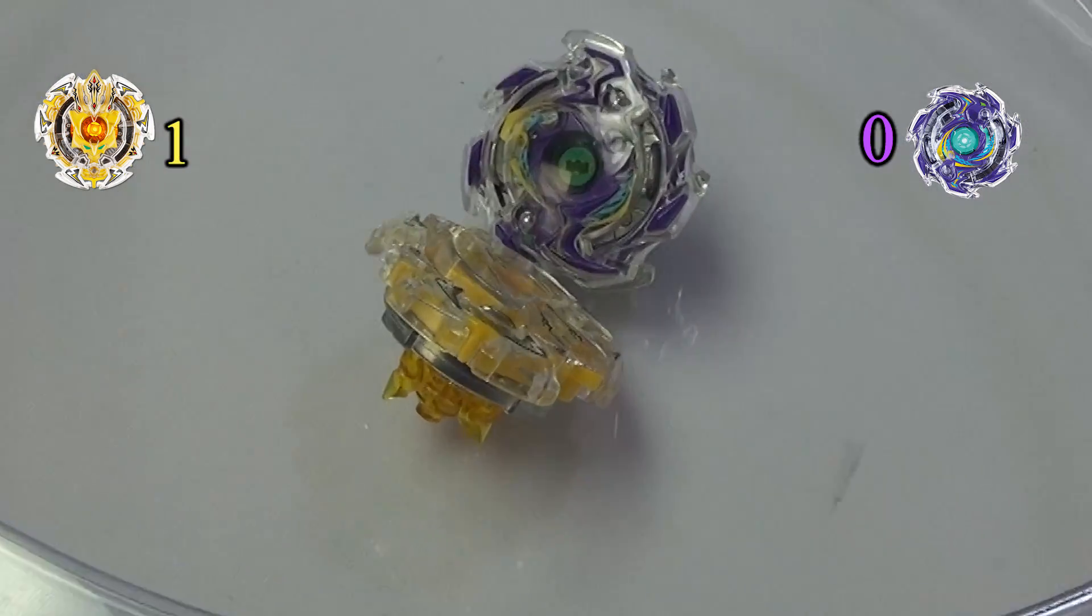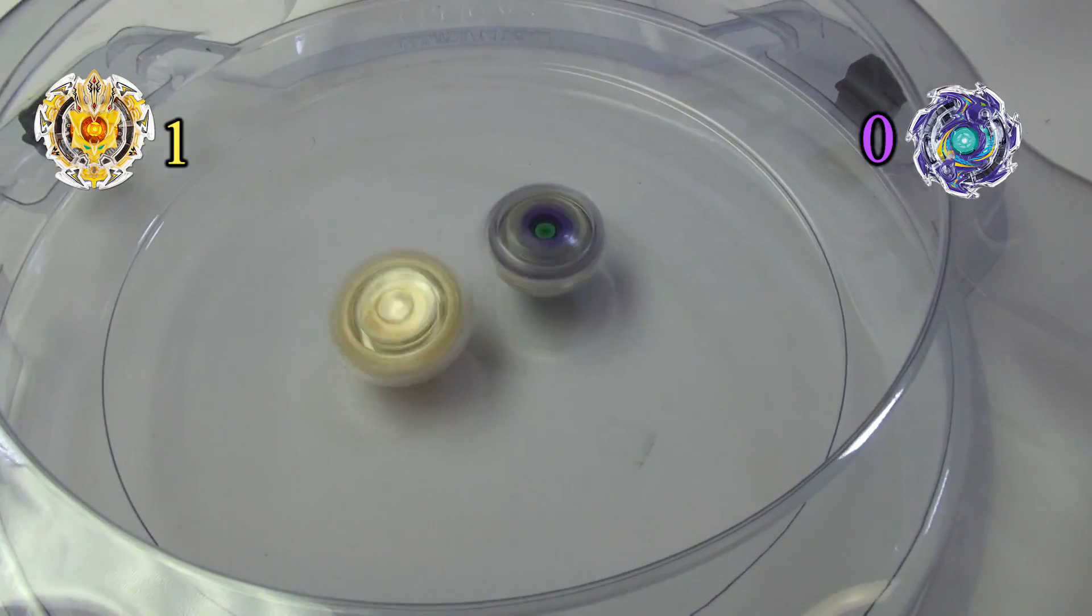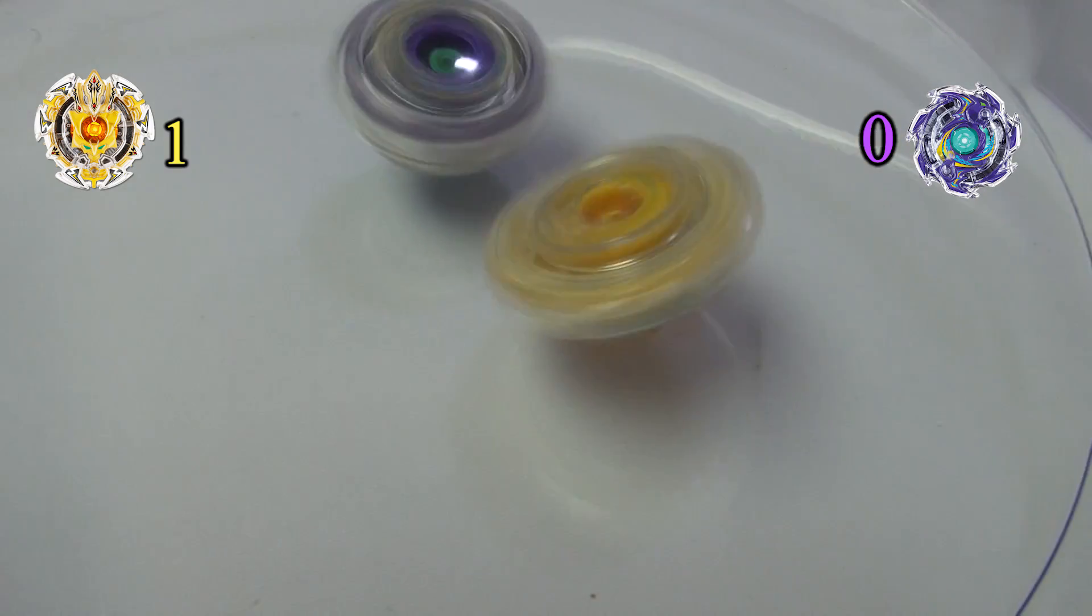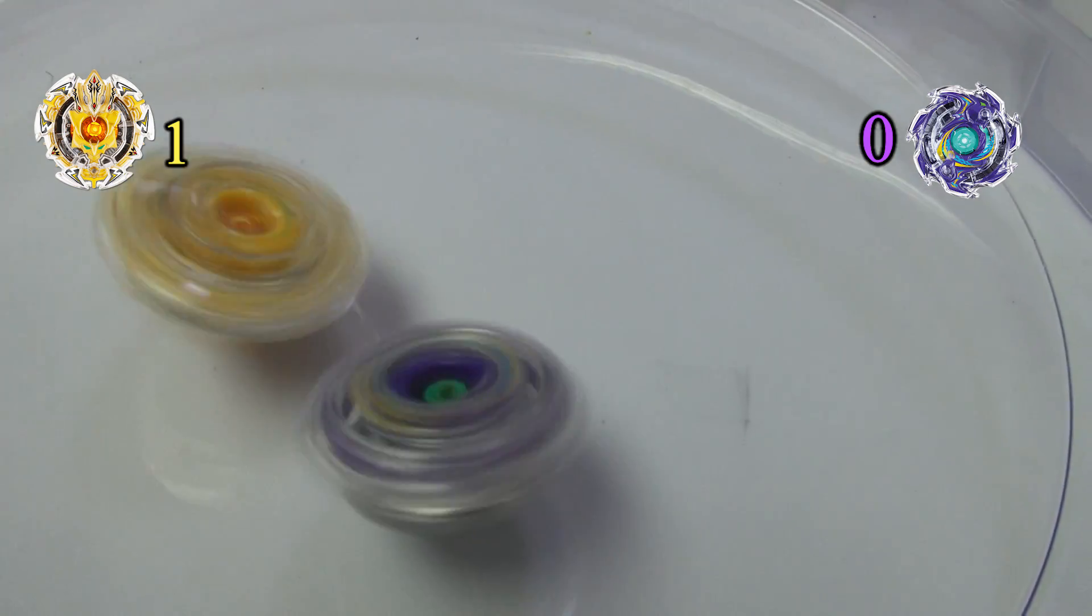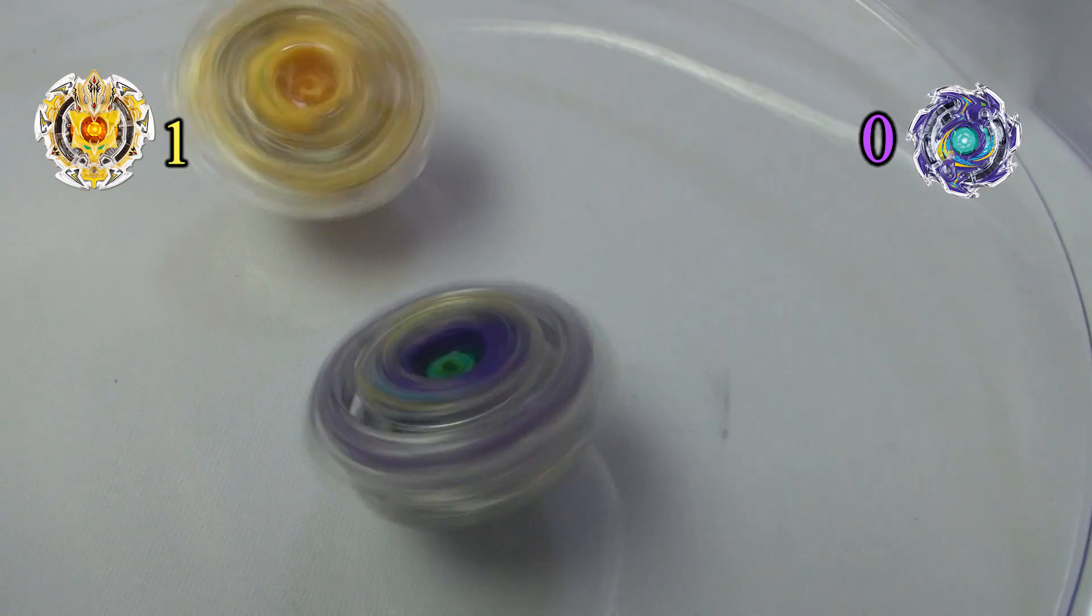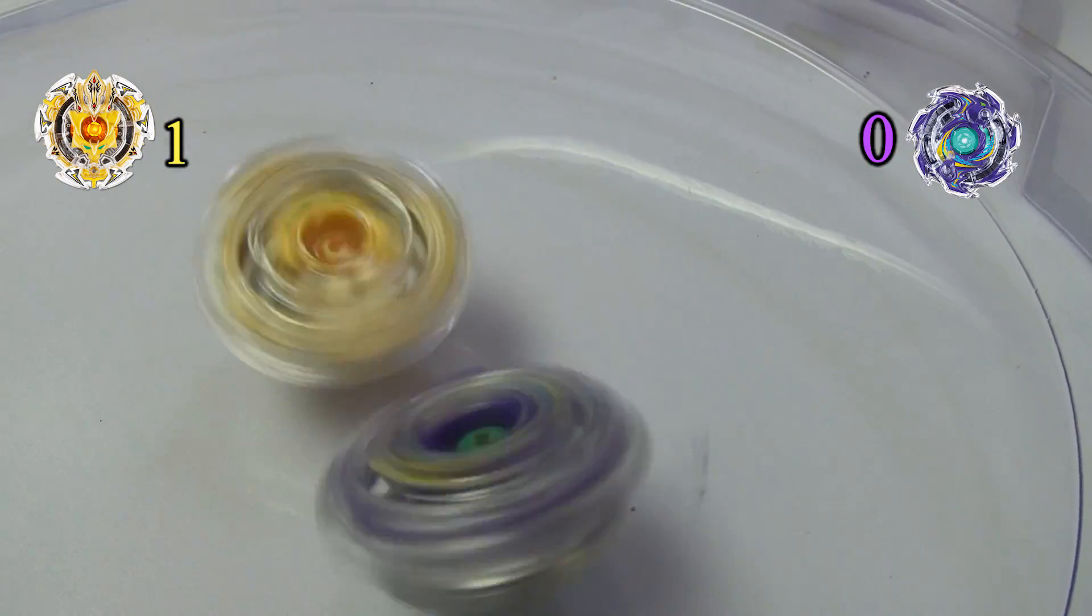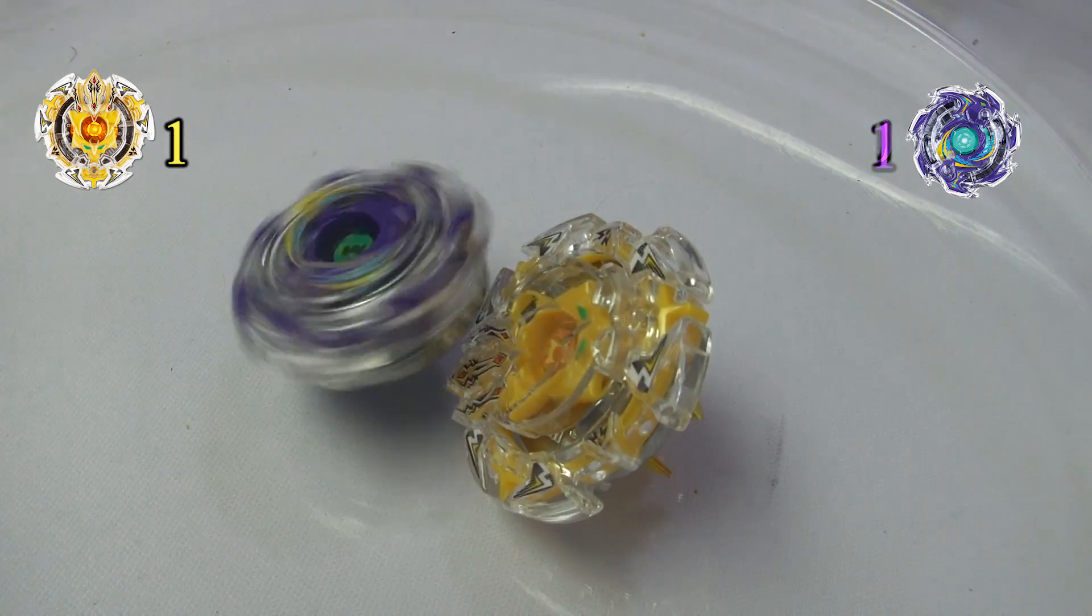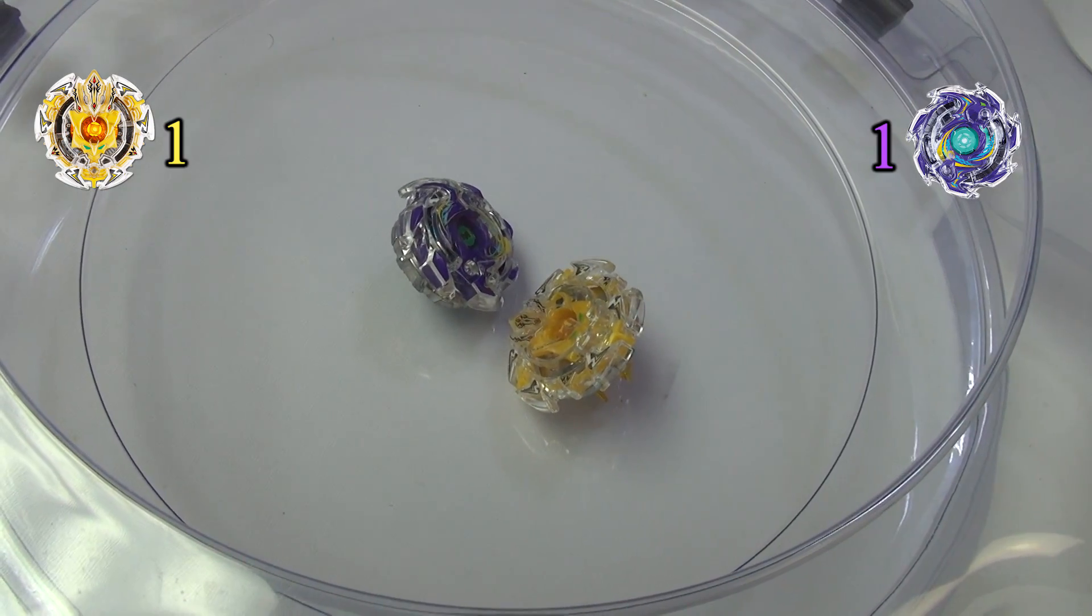Moving on to round two. Sorry I hesitated there. Trident Heavy Claw seems to have almost the same flaw as Sagittario. The claws seem to work against the stadium sometimes, and that's kind of affecting the battle, and you can even hear it as they're hitting the claws. Wyvern wins this one thanks to the disadvantage of the claws, with a score of 1-1.